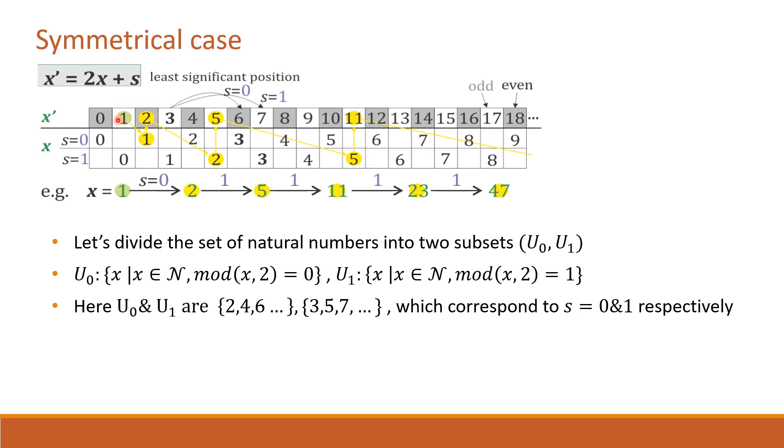Here we can see 2 is the first number in U0, which we call the first appearance of symbol 0. That makes 4 the second appearance of 0, 6 becomes the third appearance and so on. Similarly, 3 is the first appearance of 1, 5 is the second appearance of 1 and so on.